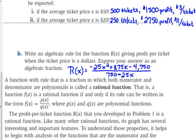Part B asks us to write an algebraic rule, naming the function R of X. That is the profit per ticket, so it's the profit function in the numerator and the ticket function in the denominator, which gives the profit per ticket. We have fractions in which the numerator and denominator are polynomials with a variable in both, called a rational function. The graphs look a little bit different, so that's what we're going to analyze in the next part.